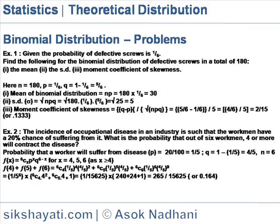Standard deviation sigma is equal to root of npq, is equal to root of 180 into 1 by 6 into 5 by 6, is equal to root 25, is equal to 5. Moment coefficient of skewness is equal to q minus p divided by root(npq), is equal to 5 by 6 minus 1 by 6 divided by 5, is equal to 4 by 6 by 5, is equal to 2 by 15.